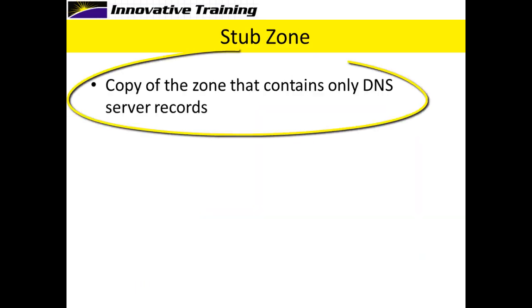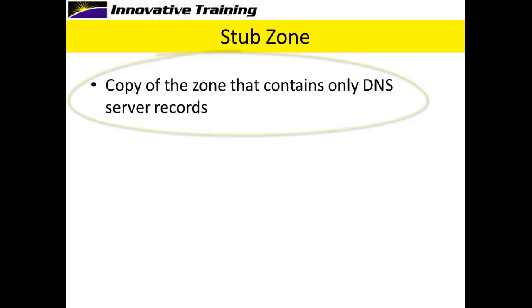A stub zone is a copy of the zone that contains only the DNS server records. If a server has a stub zone, it would hit the stub zone and shoot sideways to talk to the DNS servers that are authoritative for that domain.